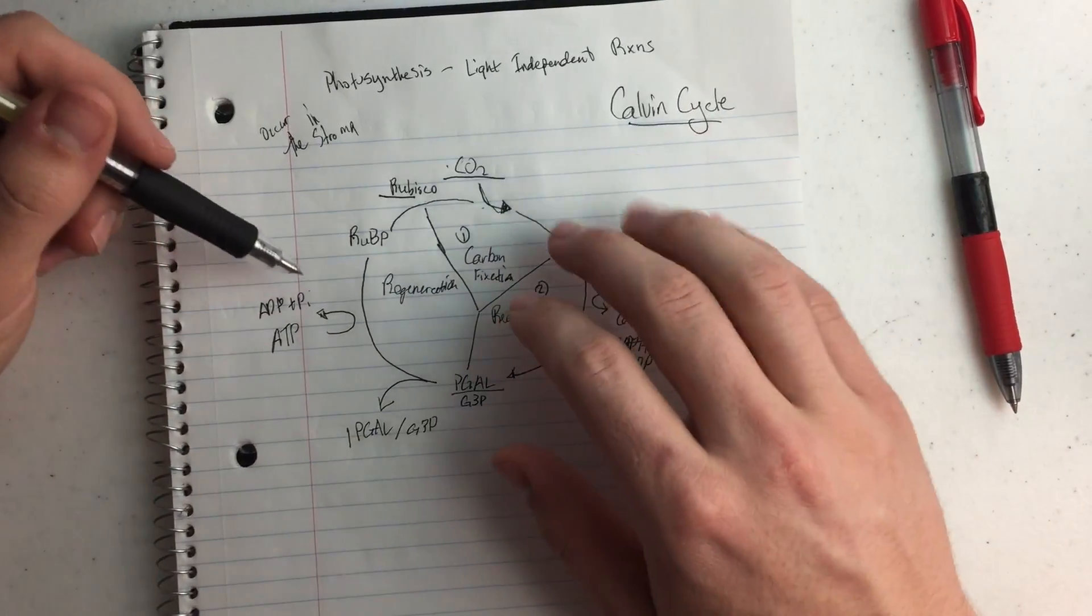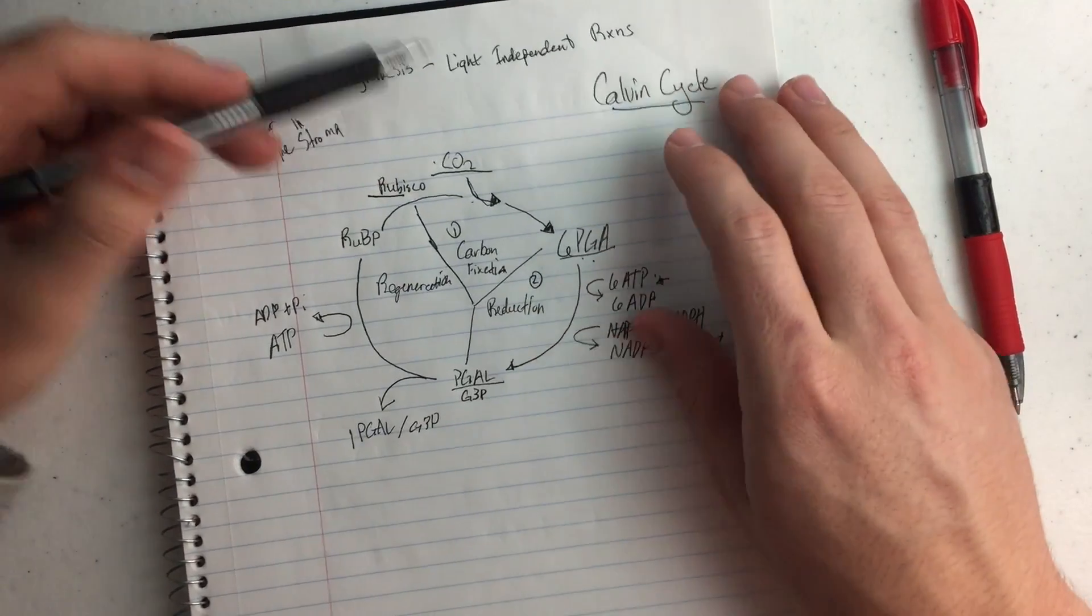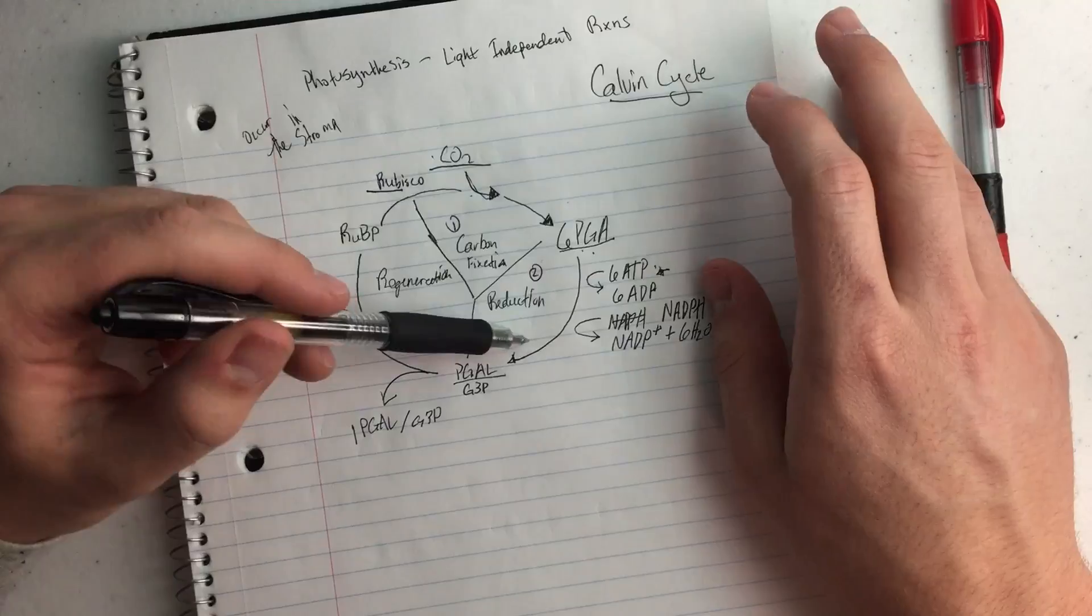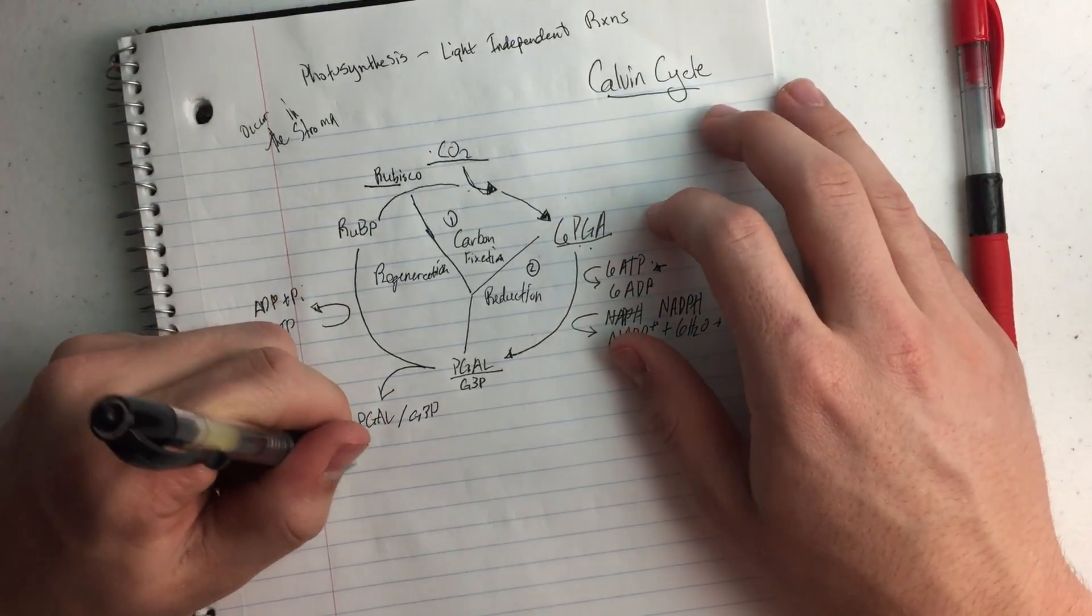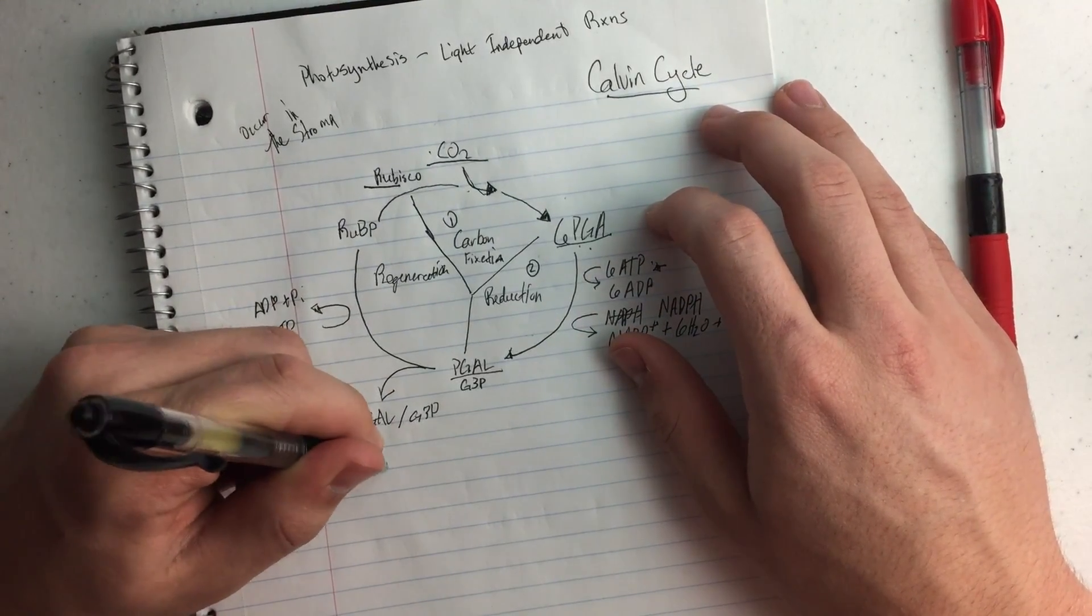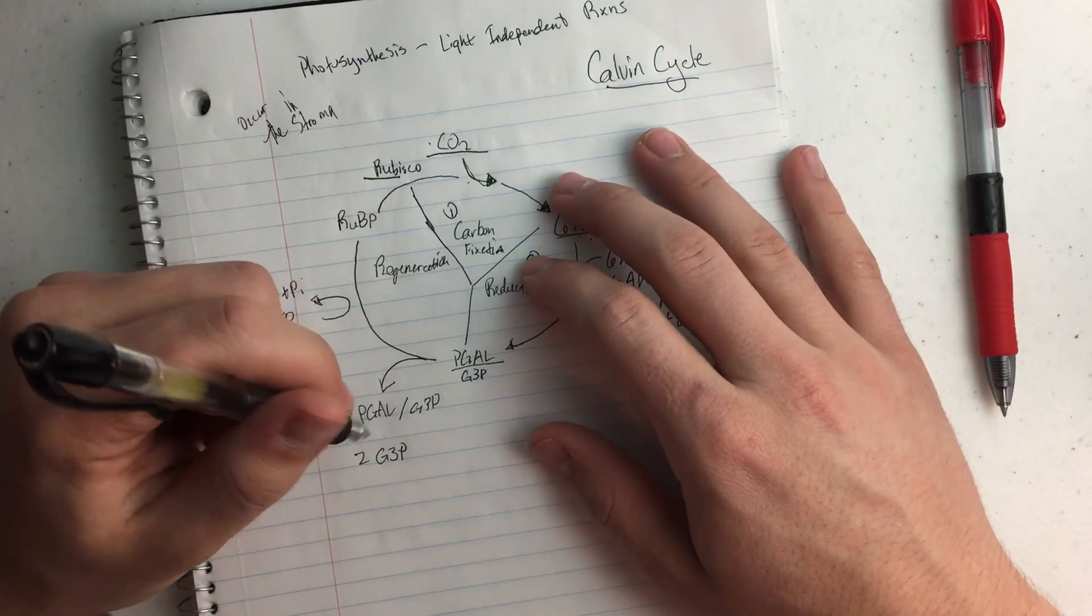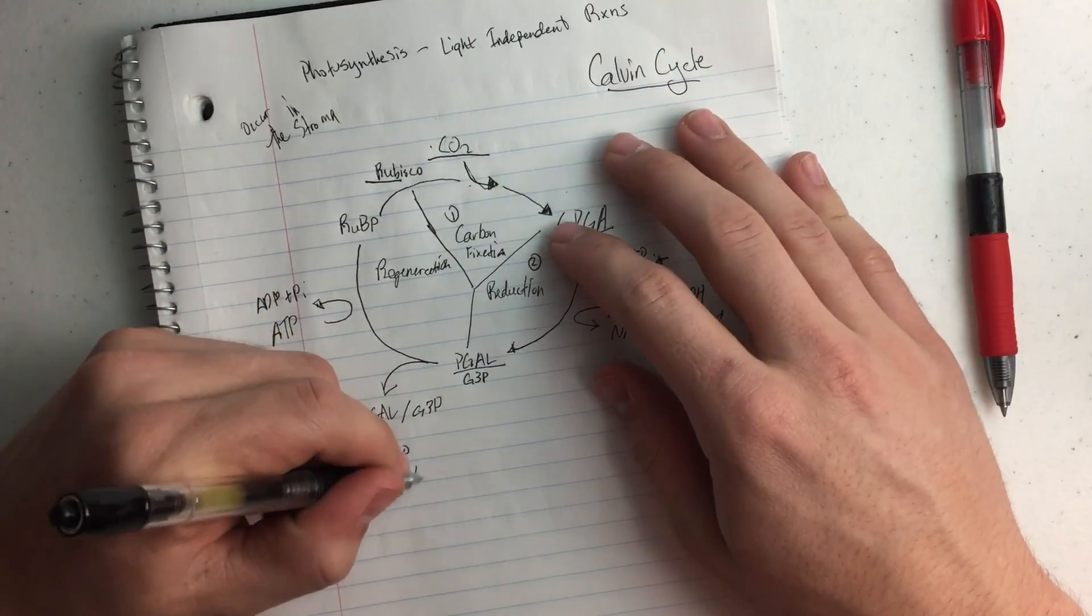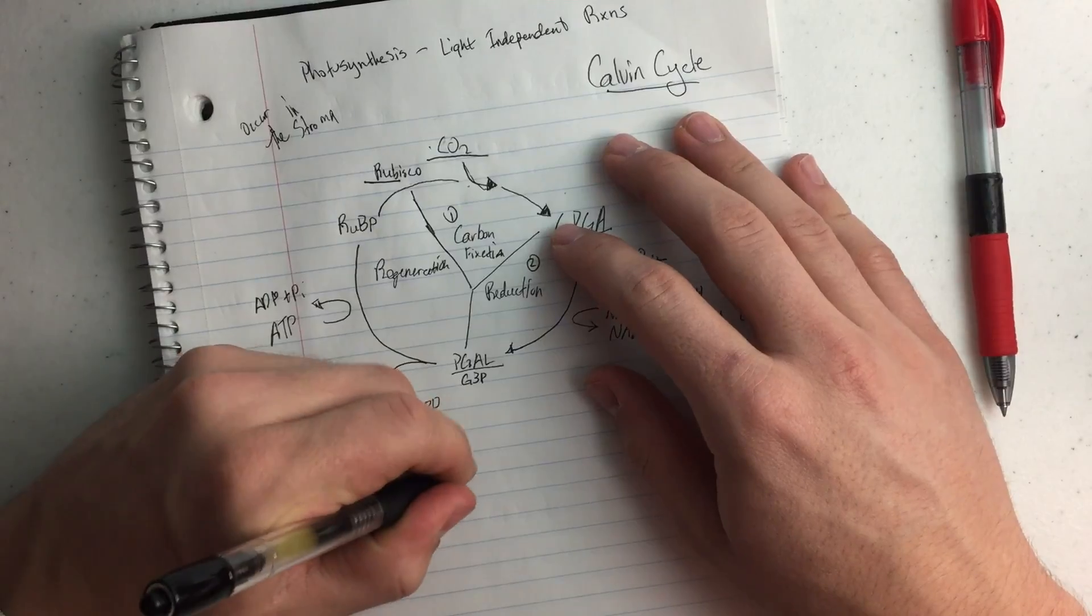And that gets us to the RUBPH, which then goes into Rubisco and CO2 again, and we're going to do this cycle again. And so then we have a total of 2 G3Ps, and it takes 2 G3Ps, or PGALs, to make 1 glucose.